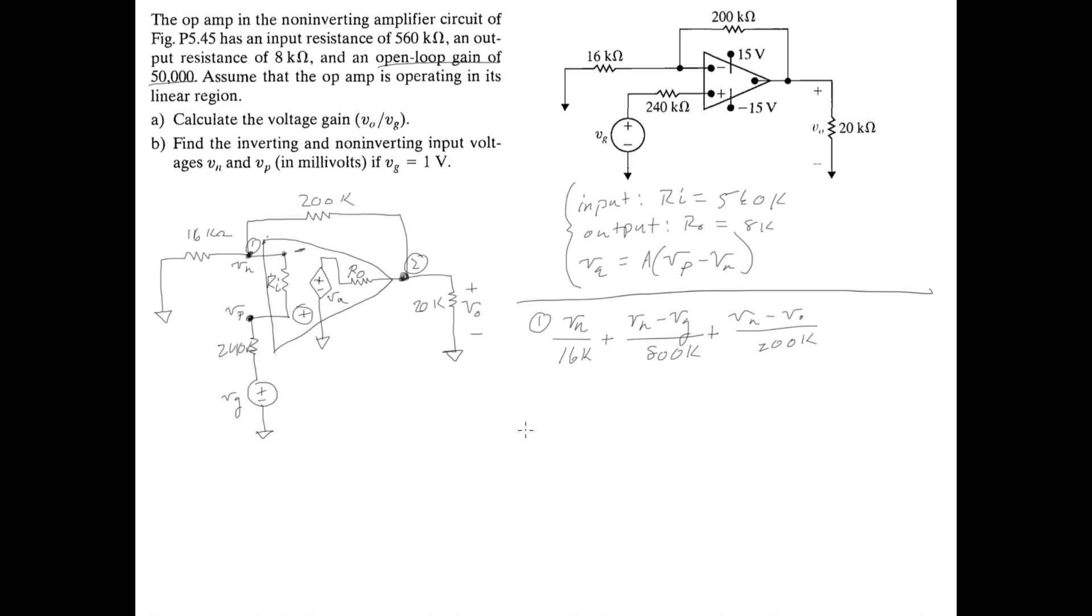And if we simplify this, what do we get? Of course, all of these are equal to 0. And if we simplify this, let's sum up all of the Vn's first. We have 1 over 16k plus 1 over 800k plus 1 over 200k all times Vn. And we're left with negative Vg over 800k. So I'm just going to move that to the other side along with this negative V0 over 200k.